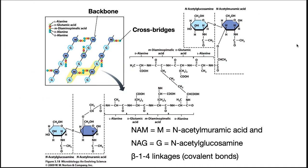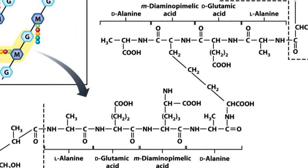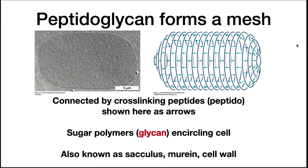Hanging off of each NAM monomer is a crossbridge made from amino acids. Each backbone is stitched to the structure by linking the crossbridges from different strands to make a mesh. The result of the crosslinking is a mesh that surrounds a microorganism.